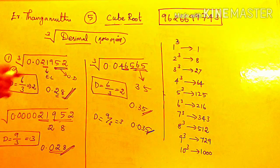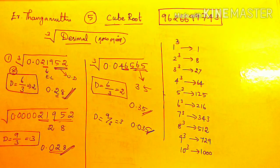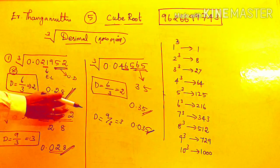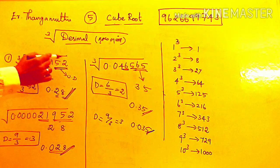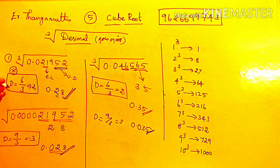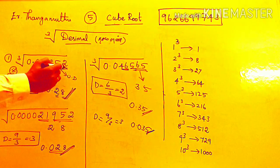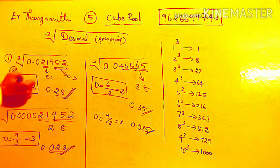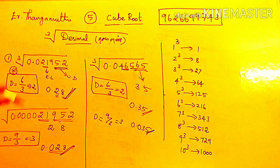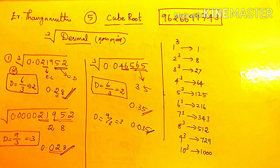The answer is 0.035. You can see the number of digits determines the decimal placement. It's a normal setup — the value is normal. The number of digits divided by 3 determines the answer format.